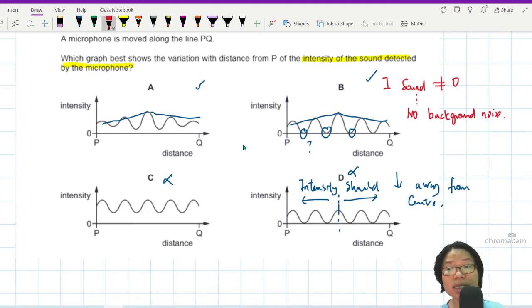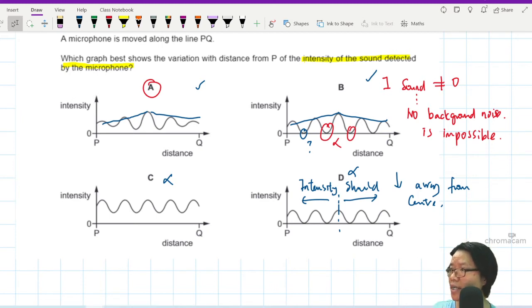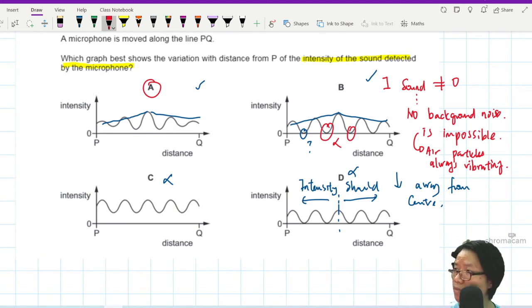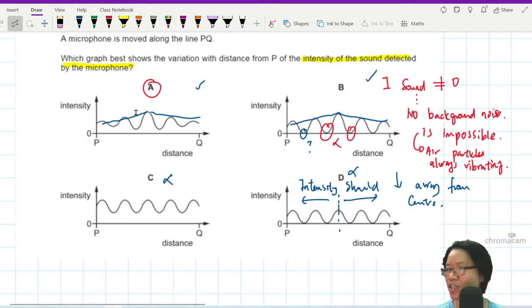If I stop talking, you can actually hear the background noise of my fan. Although I use software to filter things out. So no background noise is impossible. Total silence is impossible. So all of this cannot. That's why the answer is A. You cannot have any kind of zero intensity for sound. Unless you have no air particles or your air particles stop moving. Because air particles are always vibrating. So that complete cancellation is not possible.